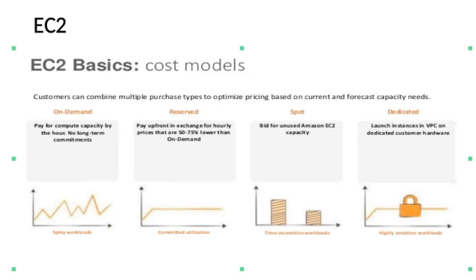Spot instances are unused EC2 instances available for less than On-Demand pricing, enabling you to request unused capacity at steep discounts to significantly lower your EC2 costs. The hourly price for a Spot instance is called the Spot price. Spot instances are recommended for applications that have flexible start and end times. Dedicated instances are Amazon EC2 instances that run in a VPC on hardware dedicated to a single customer — useful for applications with highly sensitive workloads.